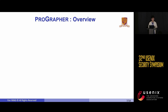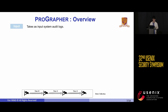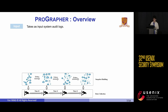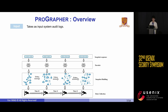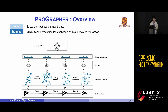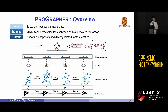To fulfill our three design goals, we propose ProGrapher. It firstly takes logs generated during system execution as input and constructs snapshots by aggregating these logs with constant size. A graph encoder model is employed to embed each graph into a representation vector, generating a series of graph embeddings that encapsulate the complete history of system execution. Later, an anomaly detection model is trained based on generated graph embeddings, where the model minimizes the prediction loss between normal behavior relationships. Finally, ProGrapher outputs abnormal snapshots and identifies the directly attack-related system entities. I will provide a more detailed description of each component in the subsequent slides.